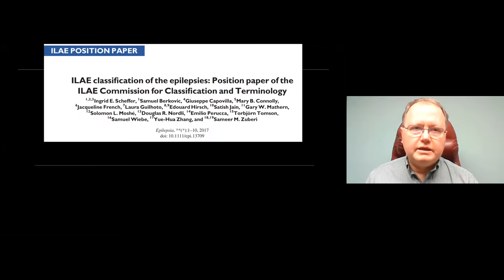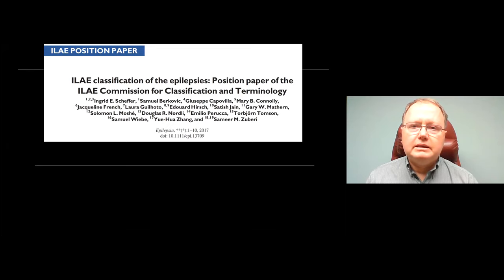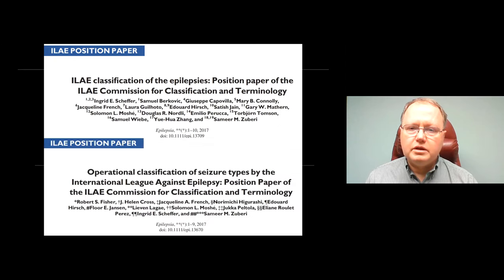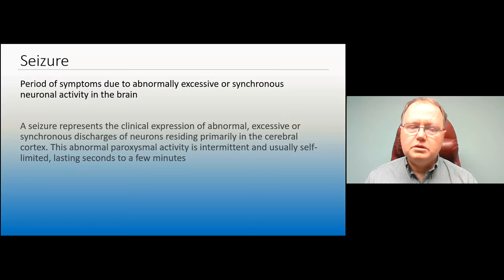The International League Against Epilepsy has been around since around 1900. Over the years, they came up with several position papers to define how we describe seizures and EEGs. In 2017, the last revision, they produced one paper on classification of the epilepsies and another on classification of seizure types. This made everyone around the world able to talk to each other using similar terminology.